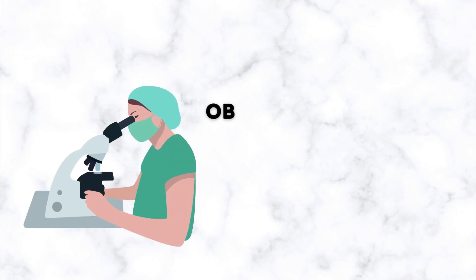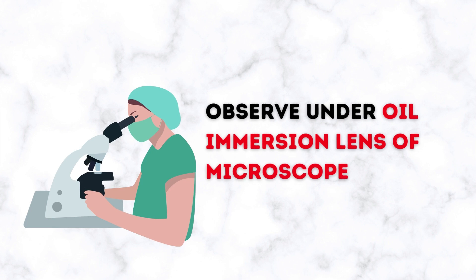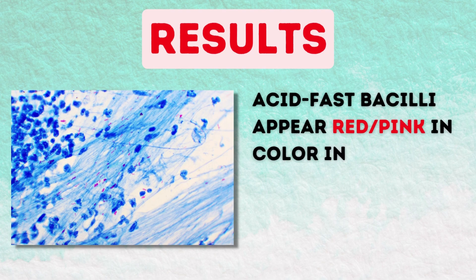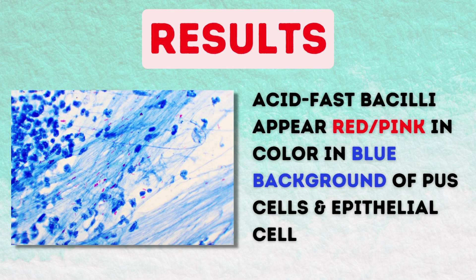Observe the smear carefully under the oil immersion lens of the microscope. In the results, acid-fast bacteria — if present — will appear red or pink in color, while non-acid-fast structures stain blue. The background, including pus cells and epithelial cells, will appear blue, and any non-acid-fast bacteria present will also appear blue.